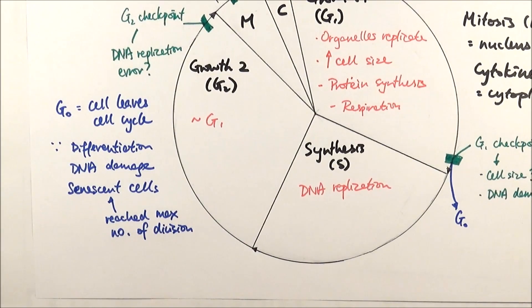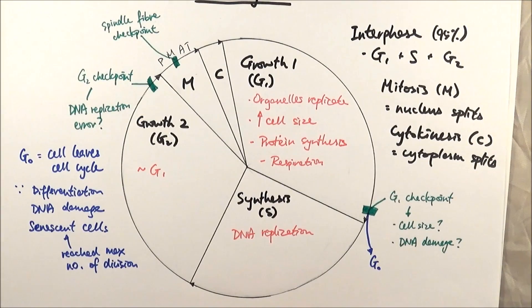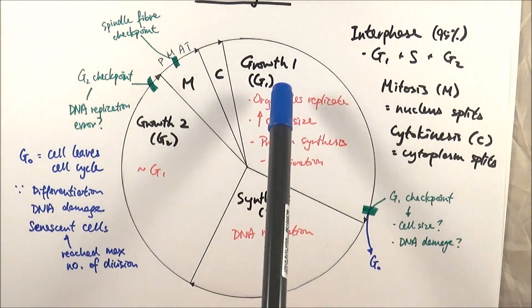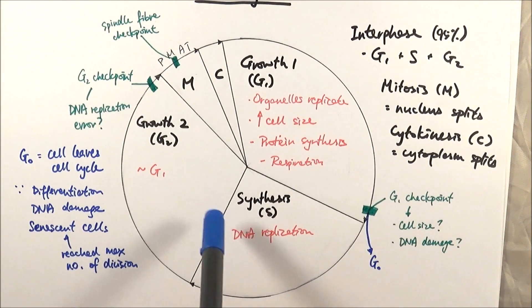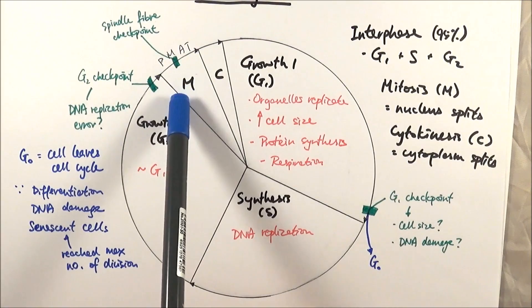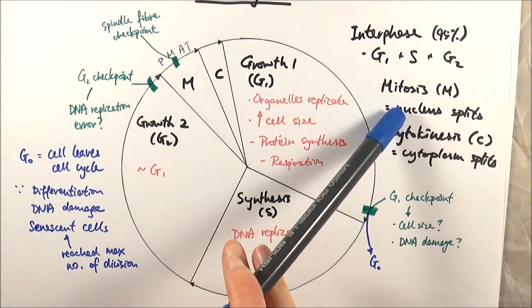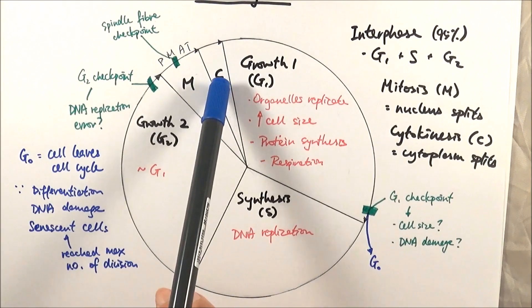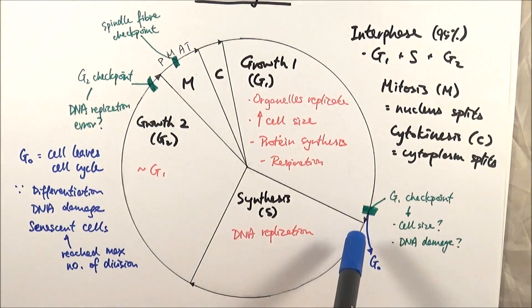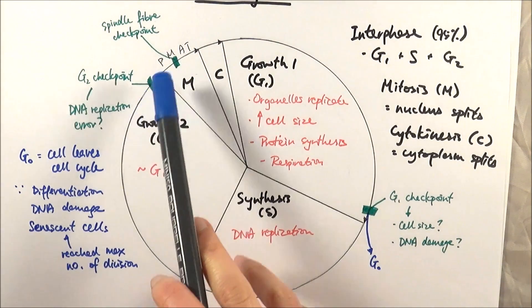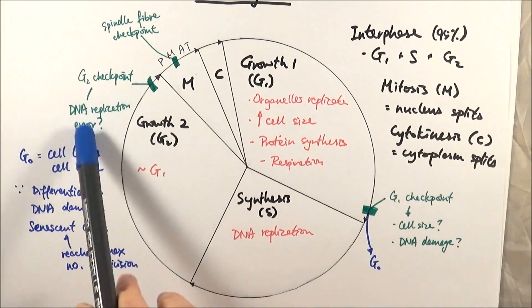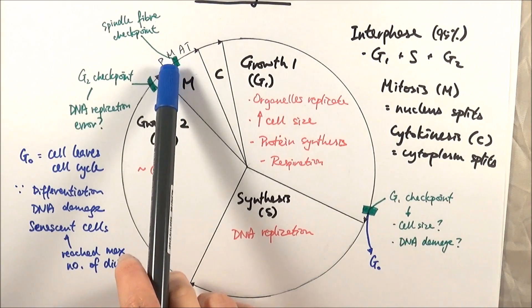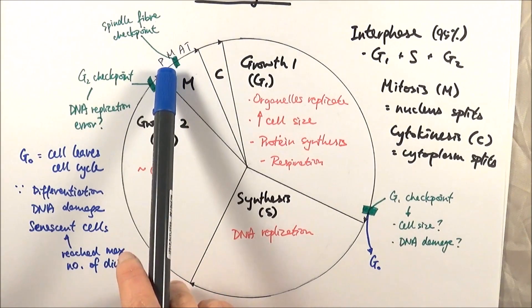Just a quick summary: we start with interphase, which consists of G1, S, and G2, which does all of these things to prepare the cell to divide. Then we get to mitosis, which is the splitting of the nucleus or DNA, then cytokinesis, which is the splitting of the cytoplasm to make two cells. It's important to note that there are three checkpoints: here, here, and here. We've got G1 checking for cell size and DNA damage, G2 for DNA replication error, and then the metaphase checkpoint or the spindle fibers checkpoint checking that the DNA or chromosomes have attached to spindle fibers correctly.